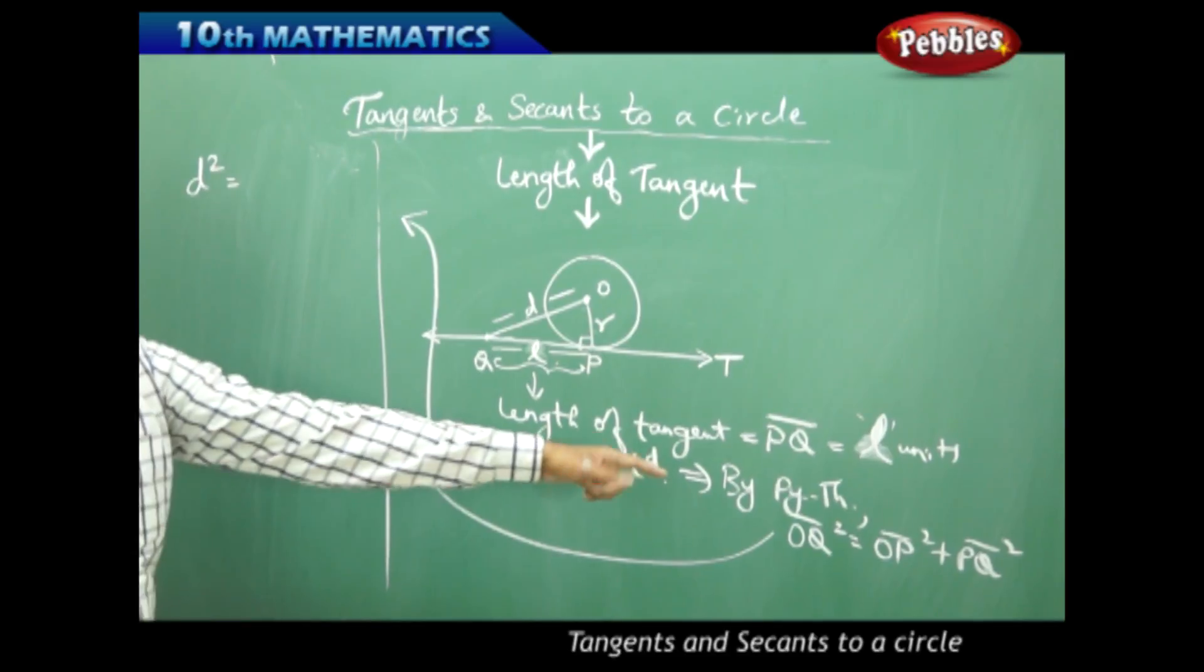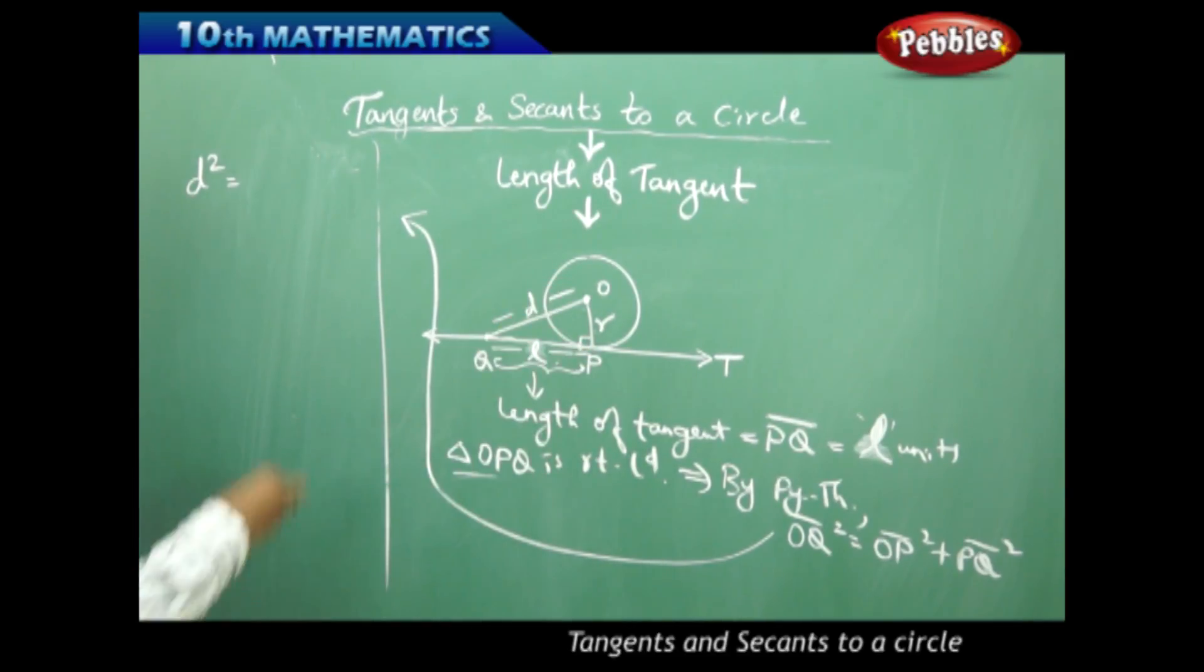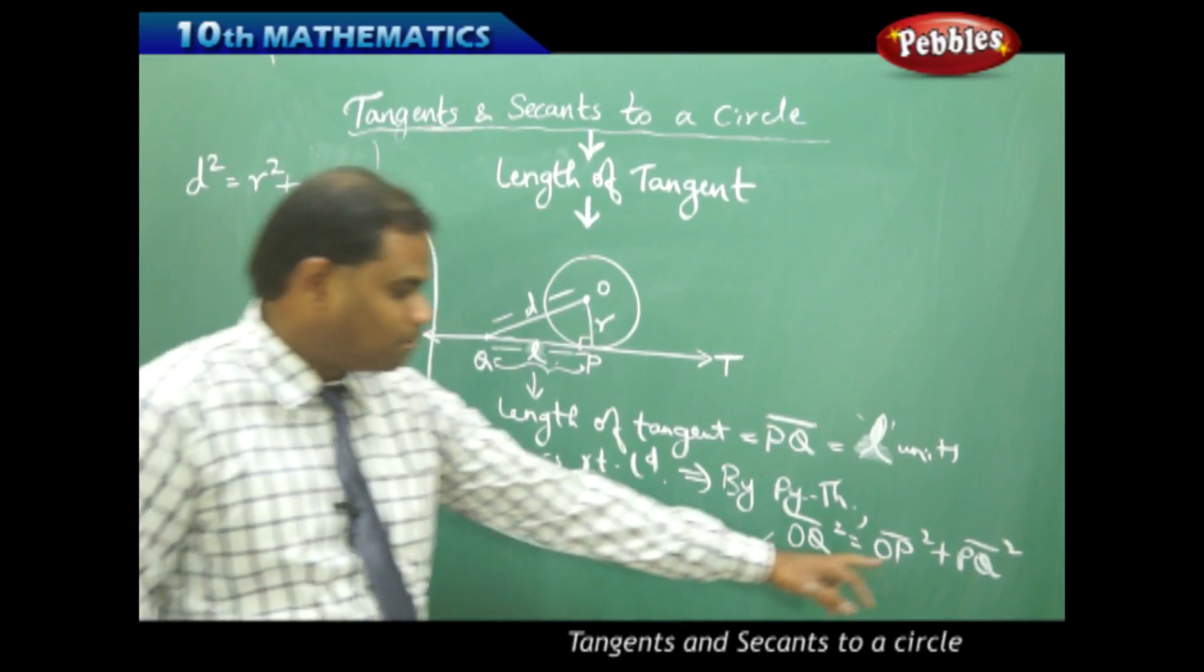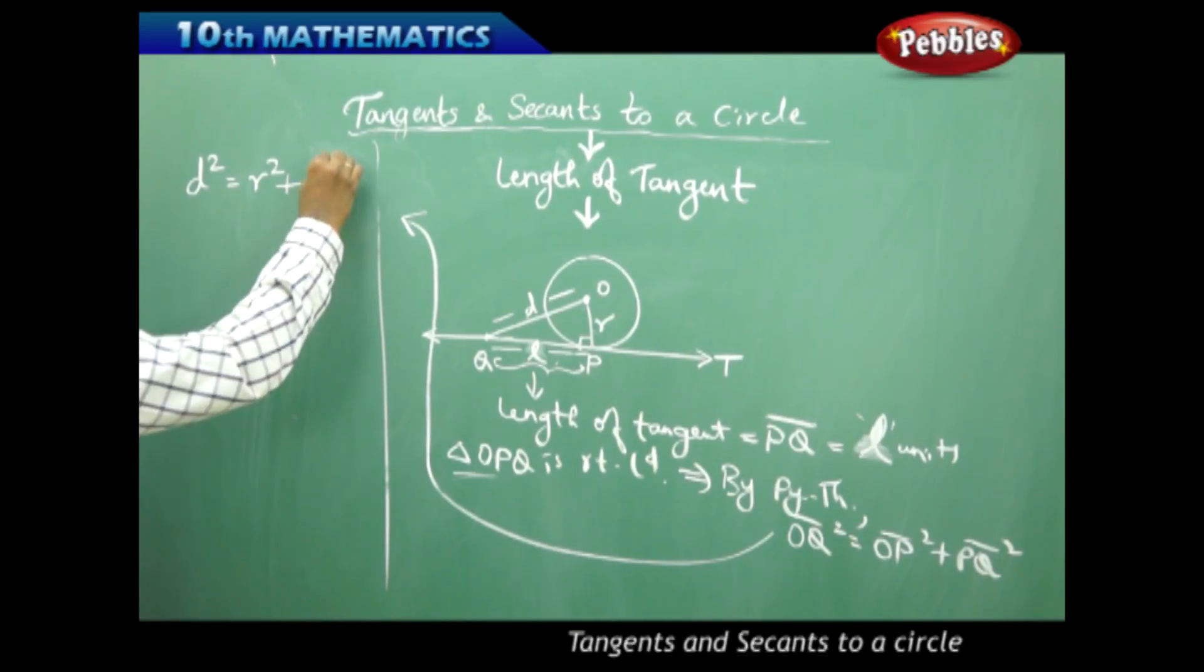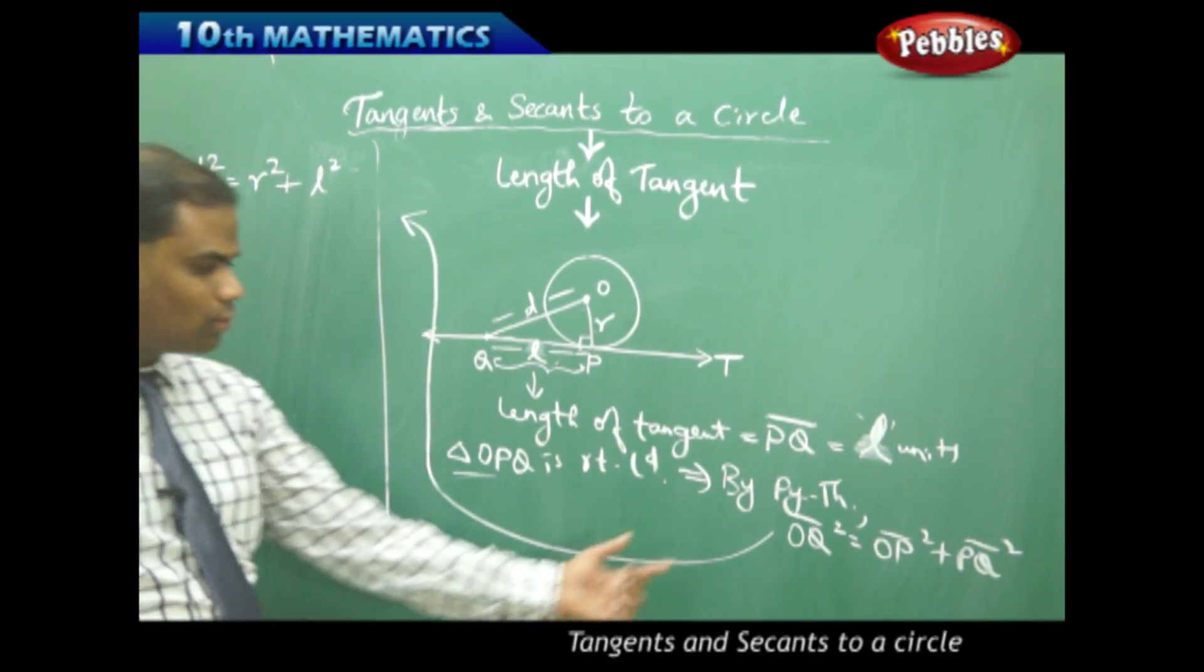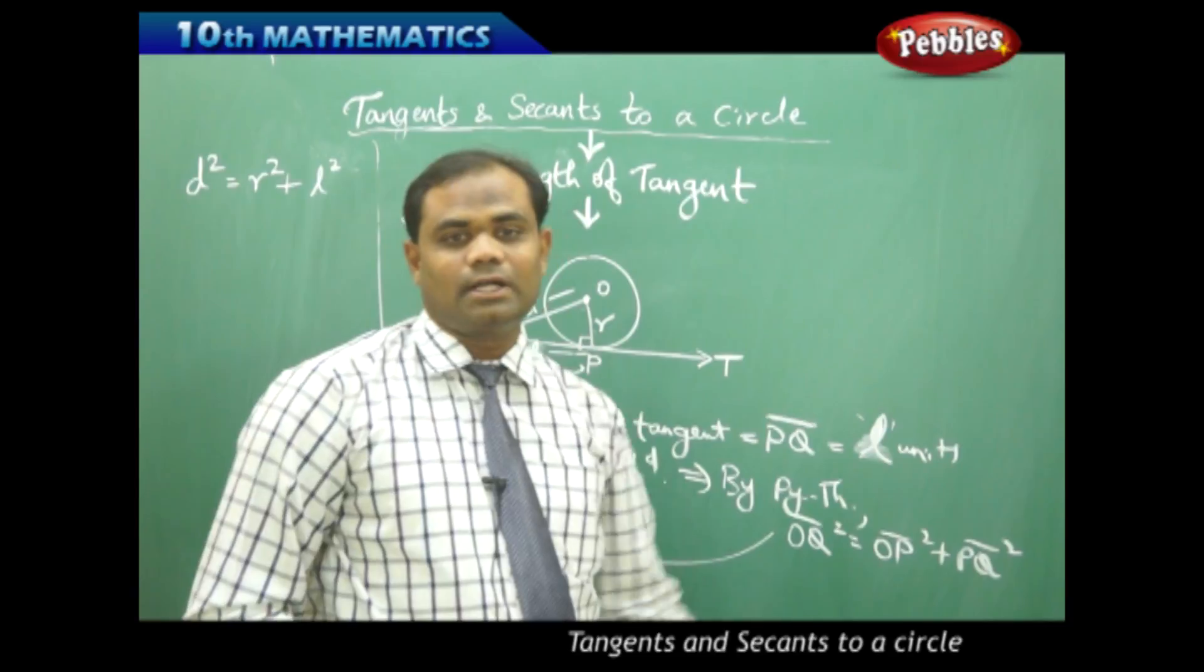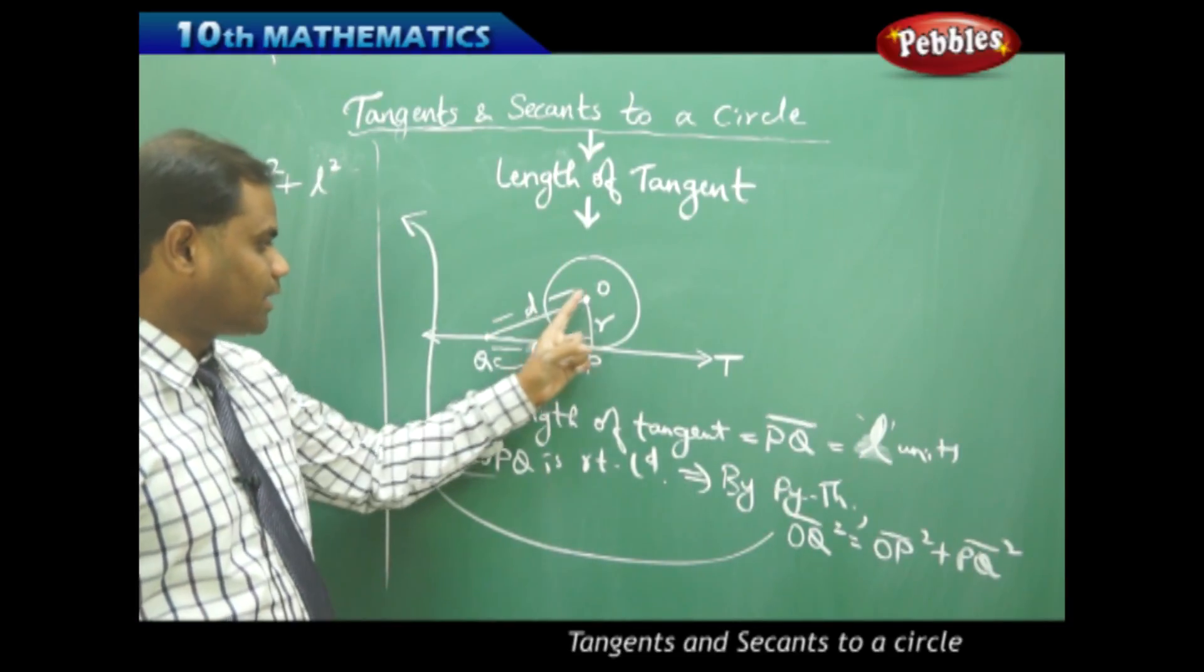So here in place of OP I have R which I am going to substitute on the right hand side as R squared. Similarly my PQ which is clearly L reduces to L squared is what I get when each of OQ, OP, and PQ are substituted from the right angle triangle OPQ.